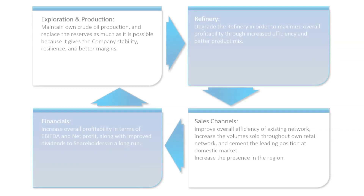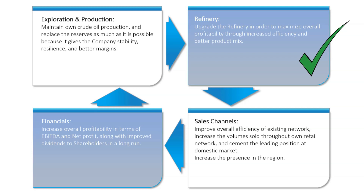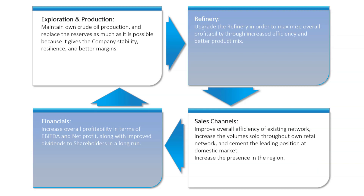Based on those premises, the top management team has defined the following strategic guidelines. Exploration and production: maintain crude oil production and replace reserves as much as possible for stability, resilience, and better margins. Refinery: upgrade the refinery to maximize overall profitability through increased efficiency and better product mix. Sales channels: improve overall efficiency of the existing network, increase volumes sold, cement the leading position in the domestic market, and increase presence in the region. Financials: increase overall profitability in terms of EBITDA and net profit, along with improved dividends to shareholders in the long run.